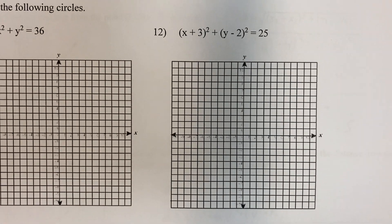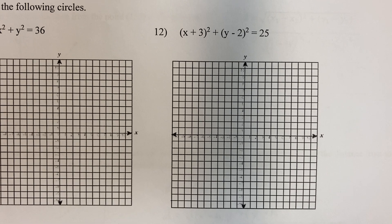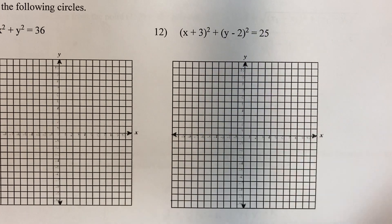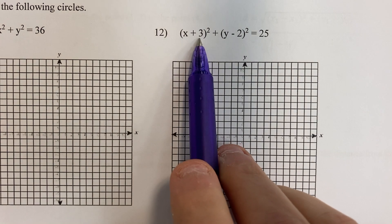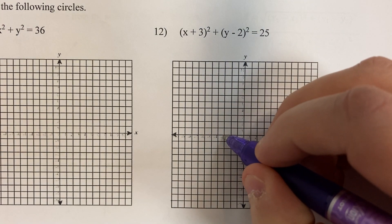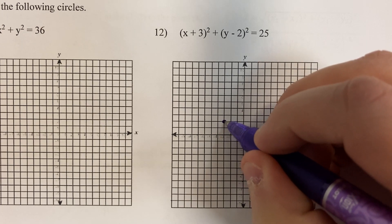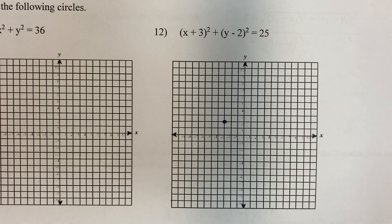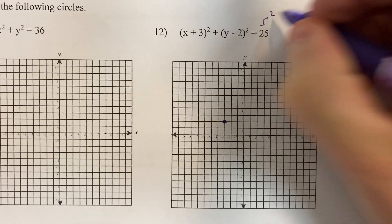It says graph the following. Well, the center is (-3, 2). 1, 2, 3... negative 3, 2. And the radius is 5.